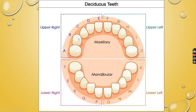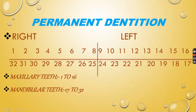Looking at the image: A, B, C, D, E is the upper right quadrant, and F through J is the upper left. The lower left is the mandibular left quadrant and lower right is the mandibular right quadrant. Now let's move to permanent dentition.